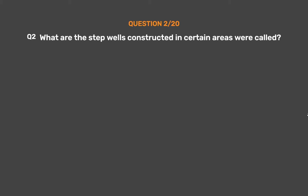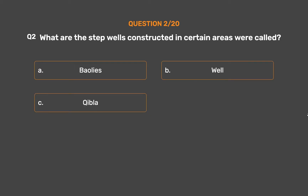Question No. 2: What are the stepwells constructed in certain areas called? Option A: Bawalese. Option B: Well. Option C: Qibla. Option D: Pond.